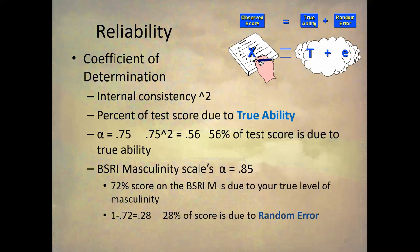With reliability, because it's a correlation coefficient, we can easily calculate the coefficient of determination — we take the reliability and square it. Once we do that, we get the percent of the test score due to true ability. So if a test's Cronbach's Alpha is 0.75, I take 0.75 and square it, giving me 0.56. That means 56% of the test score is due to true ability, and the other 44% is due to error.